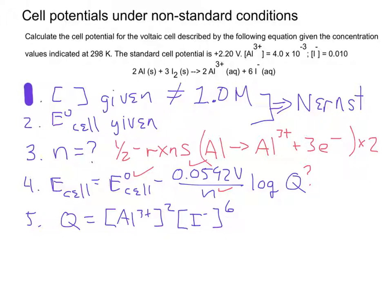And then, the product, the reactants don't matter in this case because both of the reactants are solids, so they don't appear in the calculation of Q.